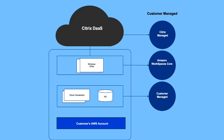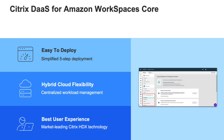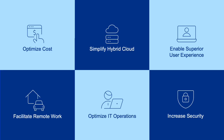Amazon Workspaces Core is a managed virtual desktop infrastructure designed to work with third-party VDI solutions such as Citrix DAS. It is the compute layer of AWS workloads that the Citrix DAS control plane can help orchestrate and manage to help deliver HDX-optimized desktops and apps anywhere.